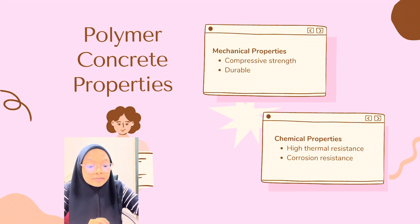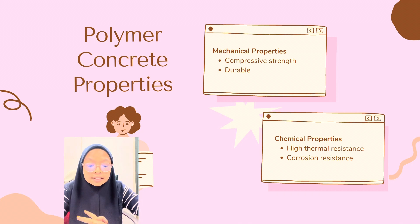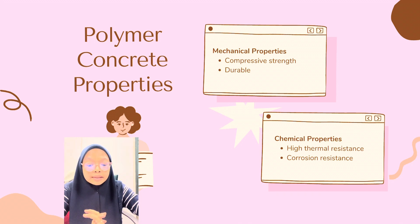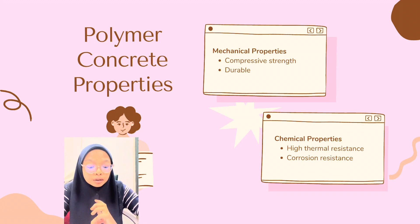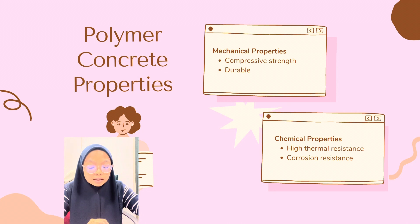Polymer concrete can survive chemical reactions such as those involving sulfate, oil, acid, and alkali. It is also resistant to corrosion and does not allow the intrusion of carbon dioxide.